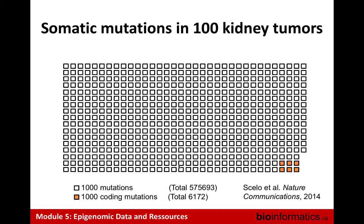If you look at the fraction of those mutations hitting coding sequences — the ones in orange — only a small fraction are coding, and those can be easily annotated in terms of which genes they hit and what the impact is. But what about all the other mutations? Similar to yesterday, the majority are expected to be passenger mutations — not important — and that's true for both non-coding and coding mutations. But it's also true that buried somewhere in there, both coding and non-coding, some of these mutations are important. Being able to annotate using epigenetics and chromatin profiling — not just coding but also regulatory sequences — is going to be important.